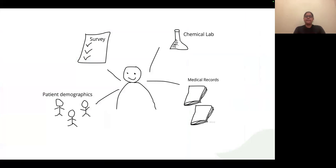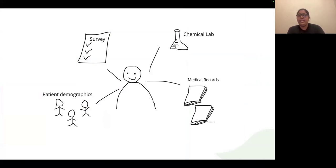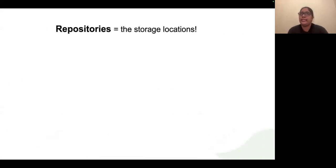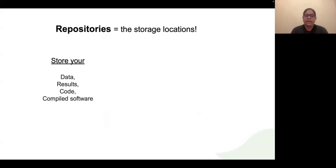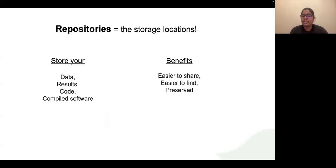The third scenario: you are a scientist working in a chemistry lab doing a lot of experiments — conducting surveys, collecting patient demographics, medical records, and chemical laboratory tests. Where do you store all this data? You store it in repositories, also known as storage locations. You could store the data itself, results, any code or software you have written, or compiled software. The benefit is that after — or even during — your experiment, it's easier to share repositories or links to them, and easier to find and preserve the data or results.